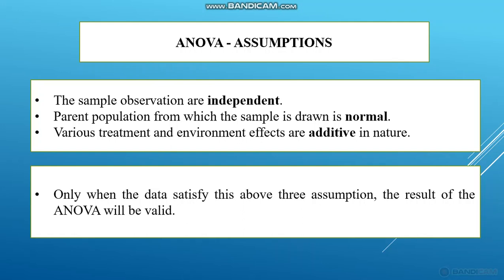There are three assumptions of ANOVA. The first one is that the sample observations are independent. The second one is that the parent population from which the sample is drawn is normally distributed. The third one is that various treatment and environmental effects are additive in nature. These three are the assumptions of ANOVA.